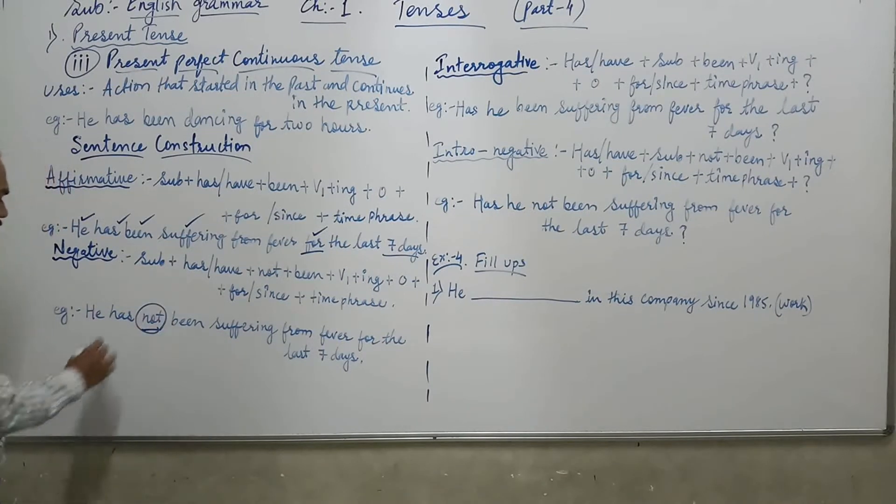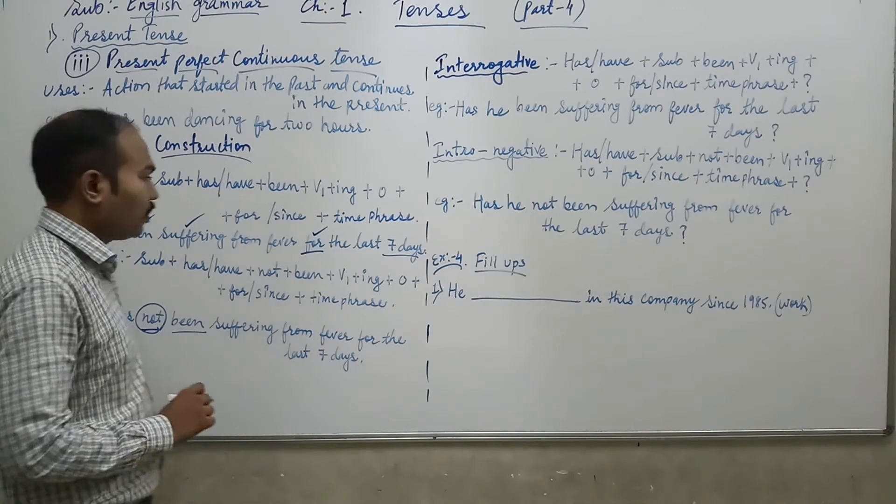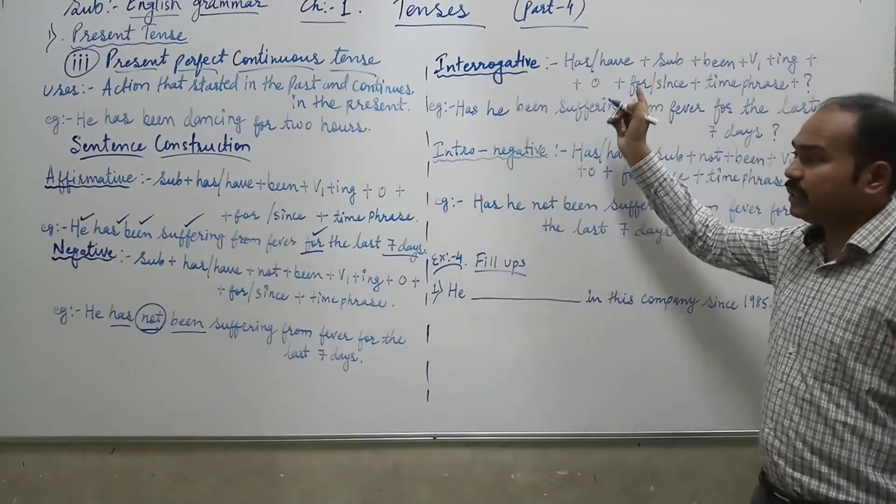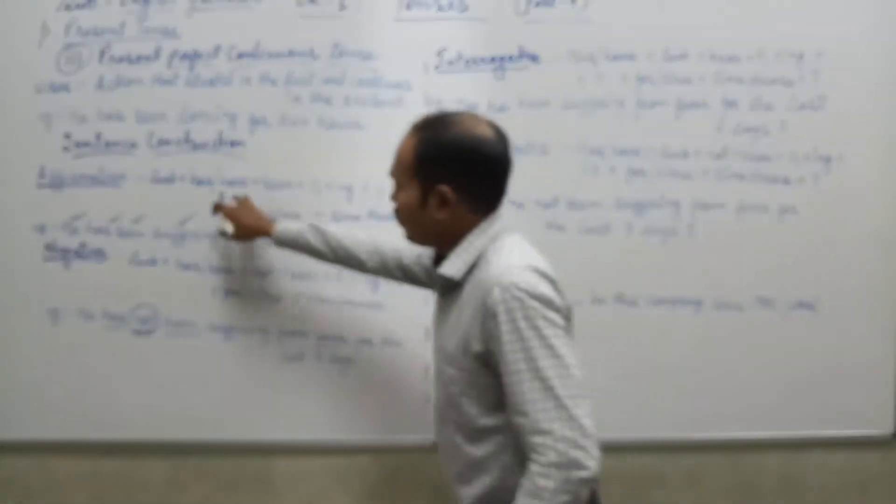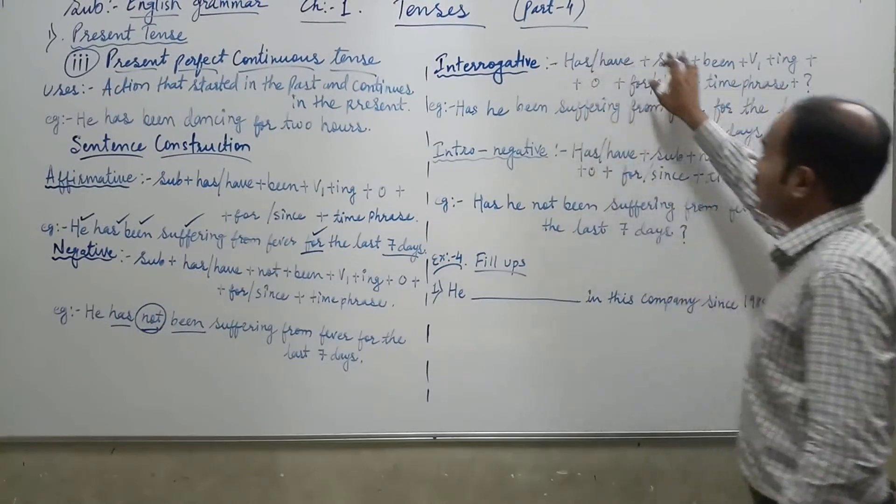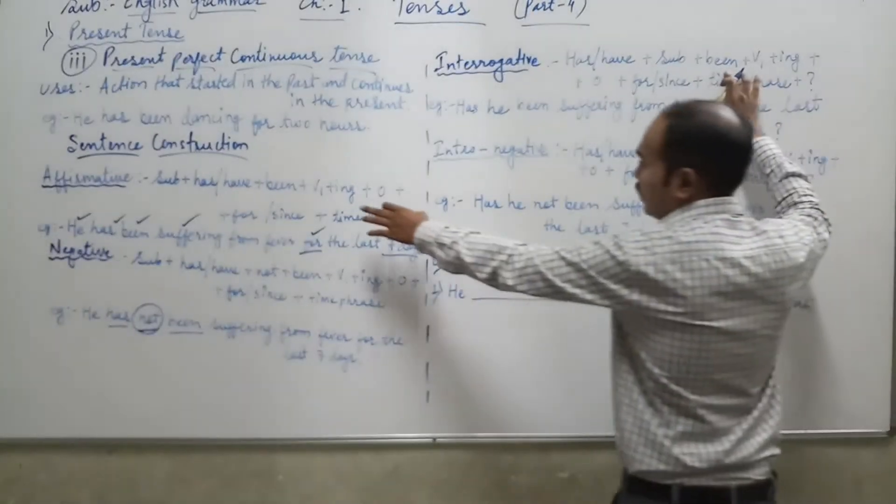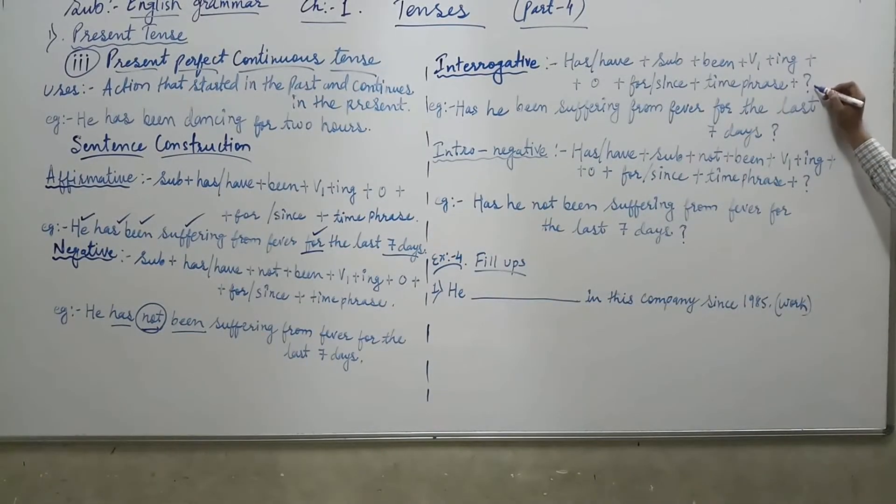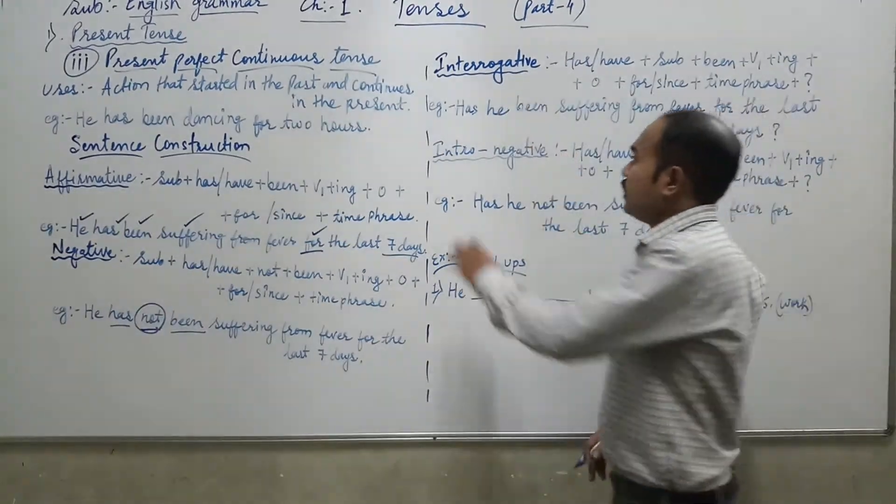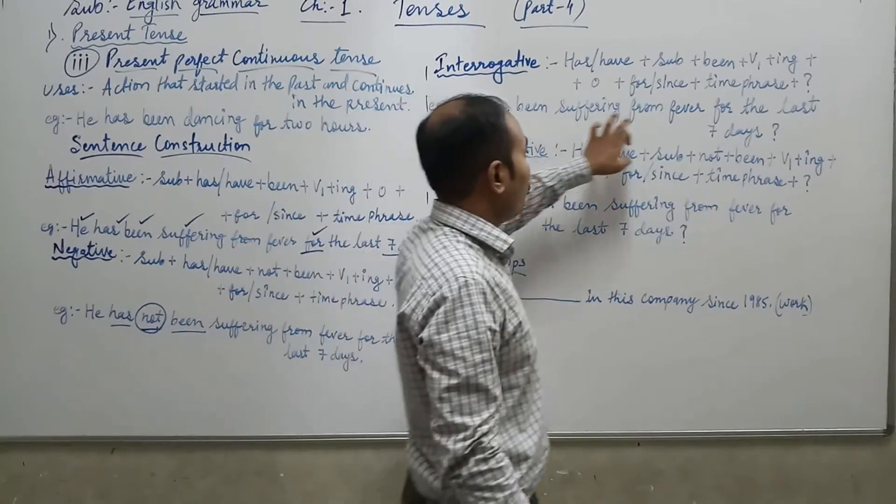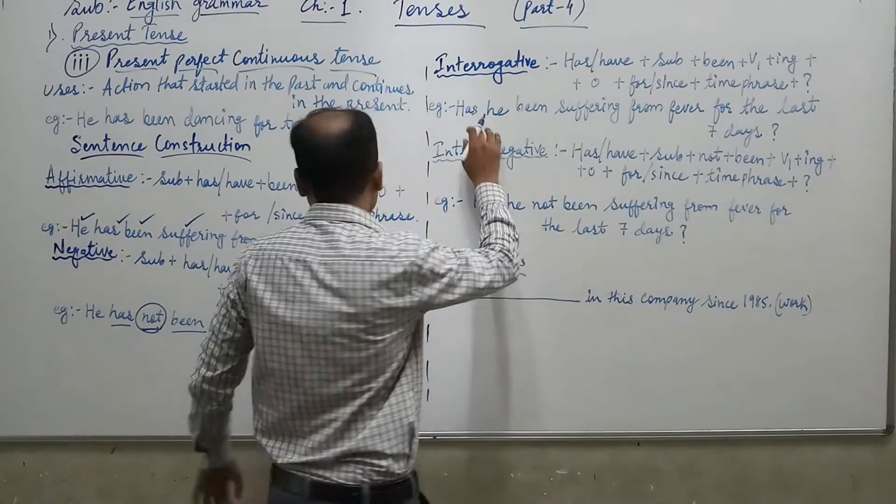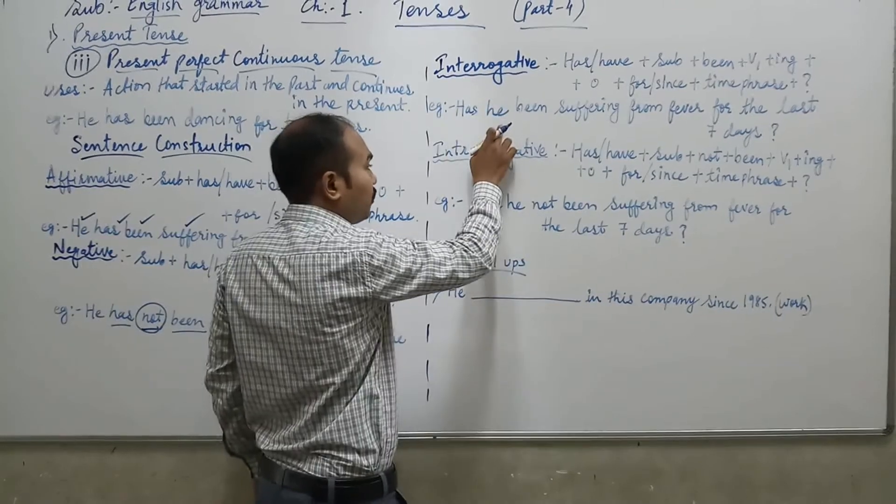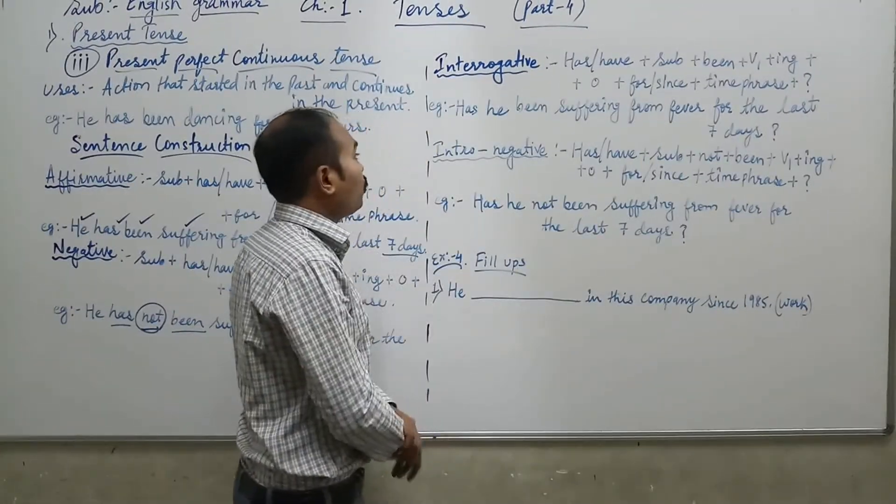Now how to make an interrogative. To make an interrogative, affirmative or interrogative mein zyada difference nahi hai. Subject or has/have apni place interchange karte, has/have aage aa jata, subject peeche aata. And the remaining things is the same. Been, then V1 ING, then other words, then for/since, time phrase. And question mark lagana. See the example, has he been suffering from fever for the last seven days. You can see the example, he has been, has aage aa gaya, has he been. So has aage aa jata, he subject peeche aa jata.